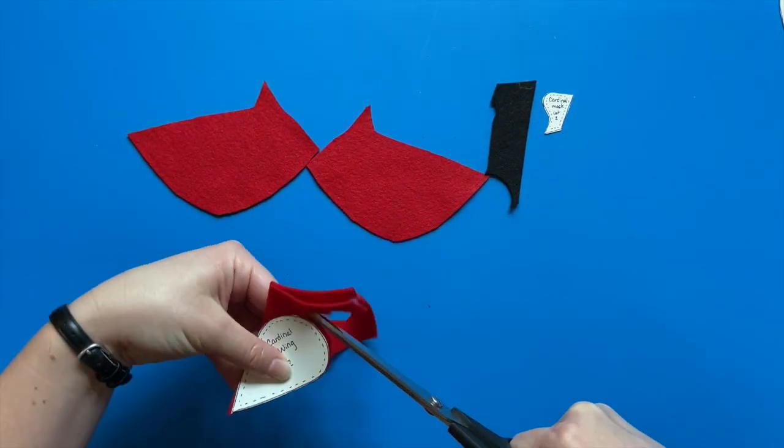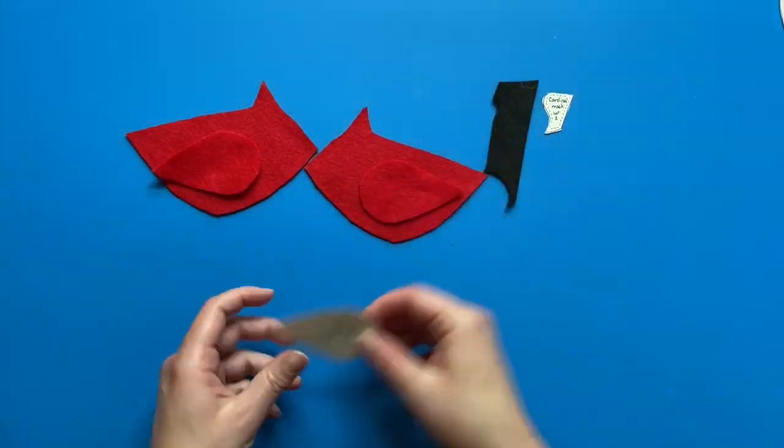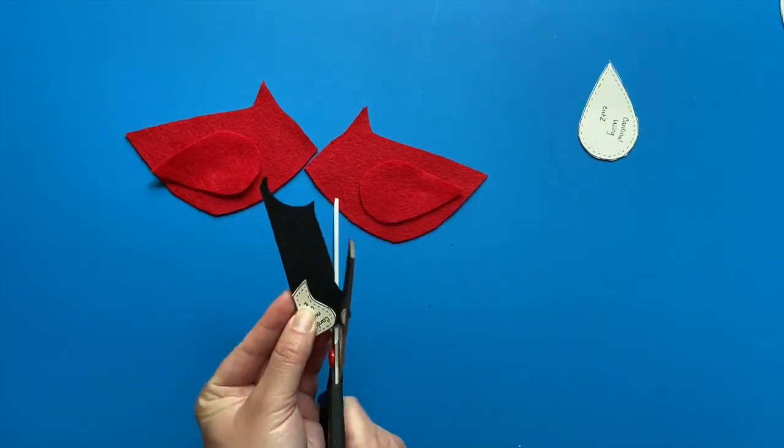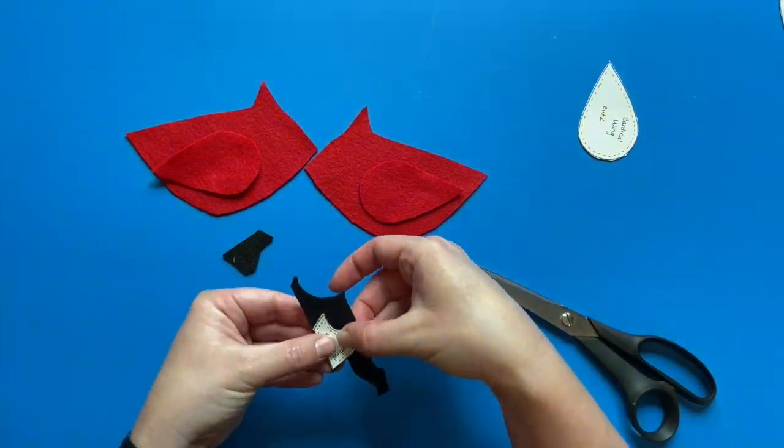In this example, I'm making a cardinal and chose to make the wings and the body both red. The cardinal also has a black area on its face, so I'm using black felt to cut two face masks, one for each side of the bird.